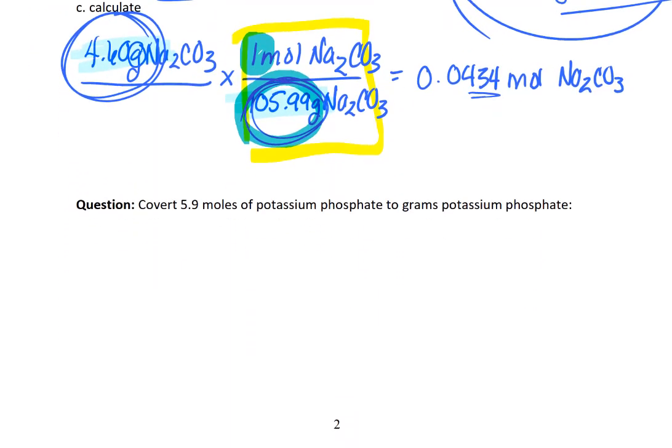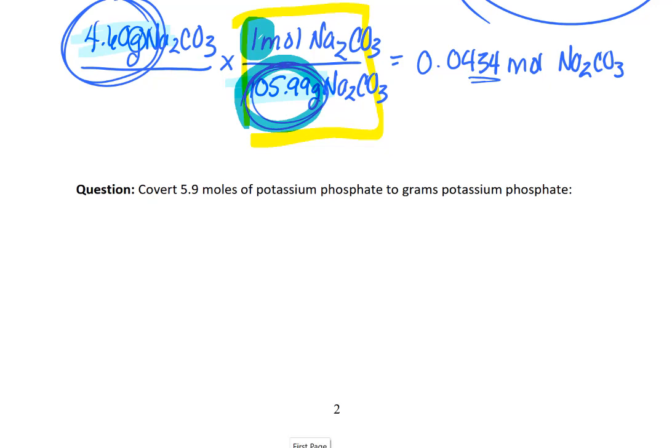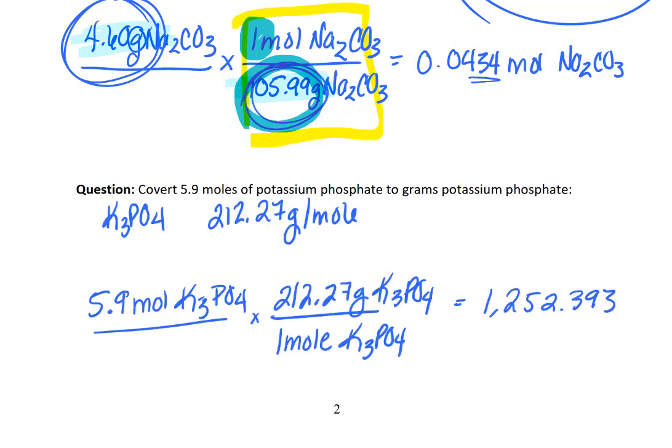So we've got one more. Why don't you see if you can pause and give this one a try on your own and then come back and solve. All right. So we're back after pausing. What you did in this problem was a couple of things. First of all, you figured out the chemical formula for potassium phosphate. After that, you figured out the molar mass for potassium phosphate.